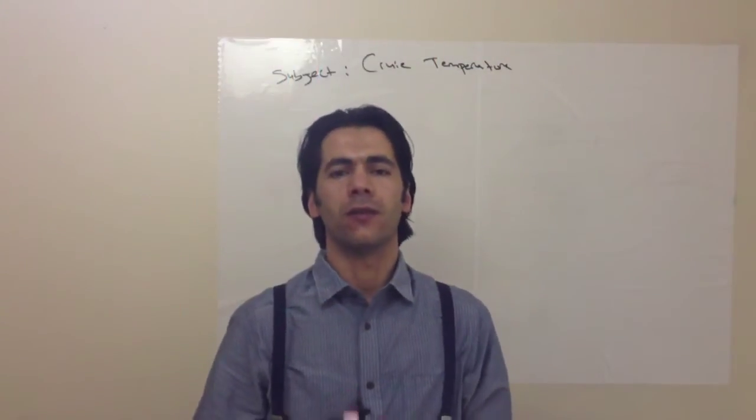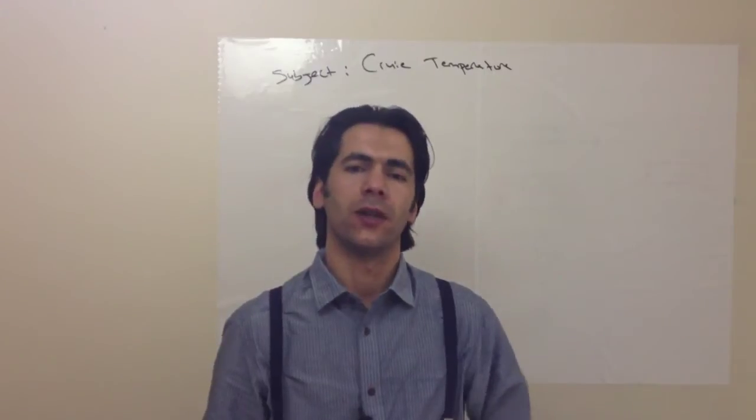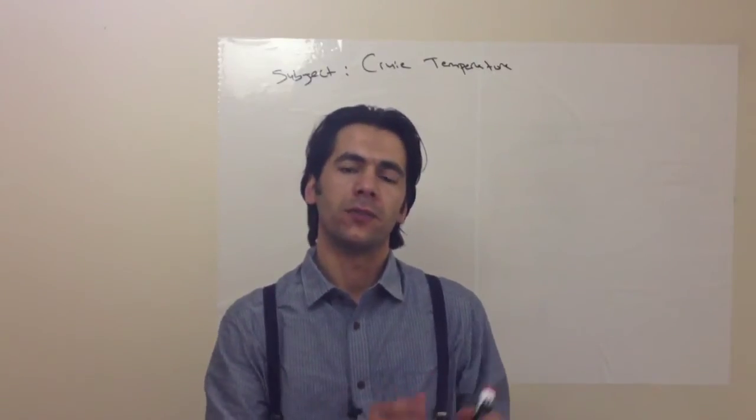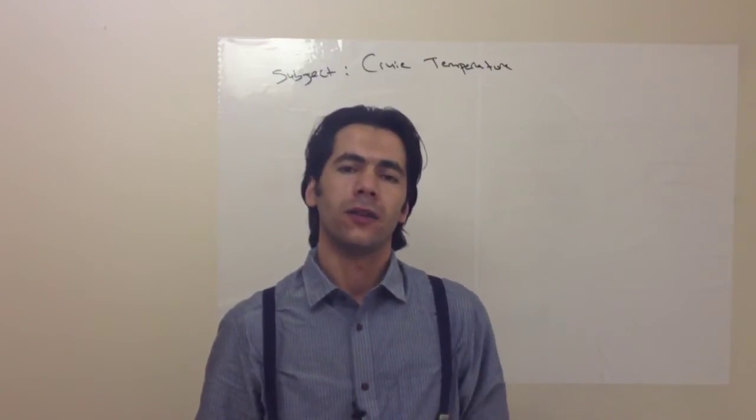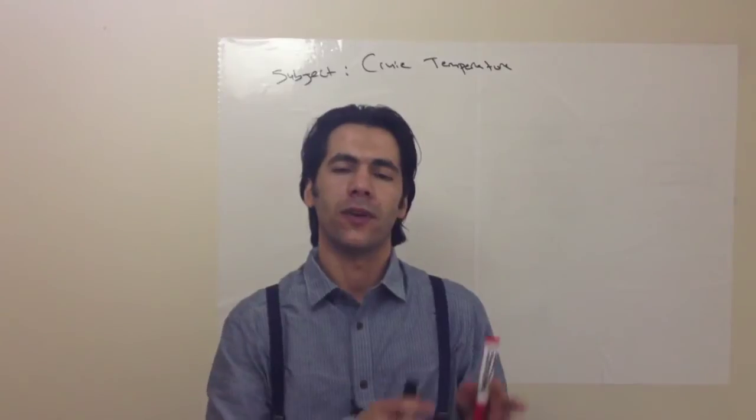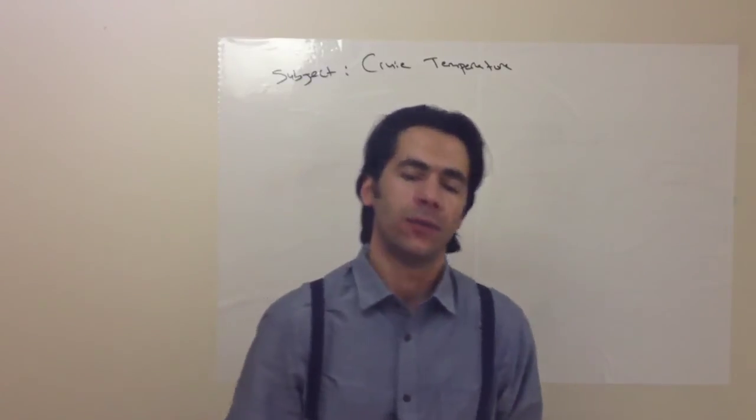Hello, I am Kenan Doğru. Today we are going to have a look at Curie temperature. Curie temperature is a temperature point where ferromagnetic materials lose their magnetic property and become paramagnetic. So now let's talk about what is ferromagnetic and paramagnetic properties.